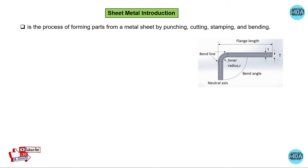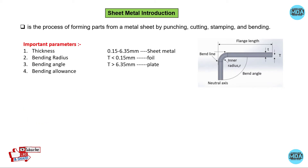Sheet metal is a forming process where we form the sheet with the help of cutting and forming operations. The thickness of sheet metal varies from 0.15 mm to 6.35 mm. Less than 0.15 mm is called a foil, and greater than 6.35 mm is called a plate. Important parameters include thickness, bending radius, bending angle, and bending allowance.